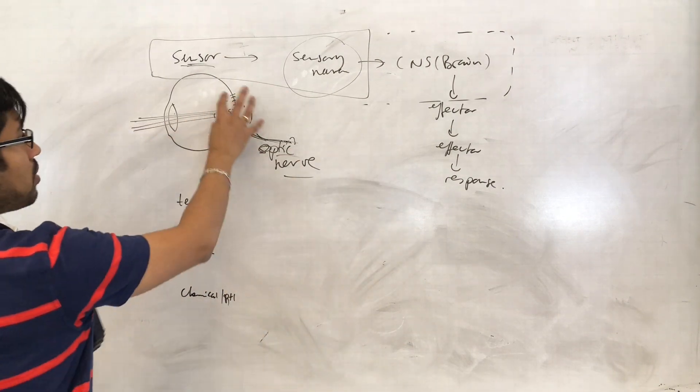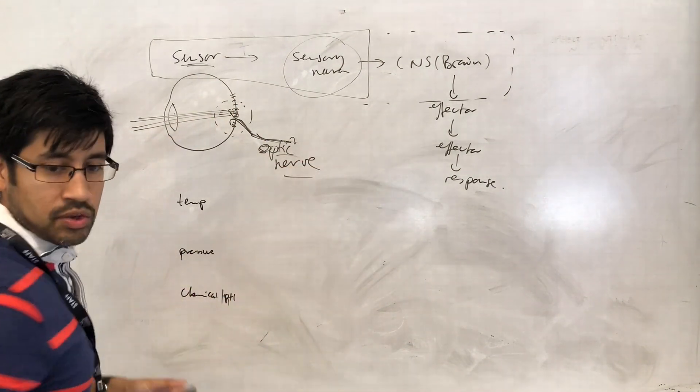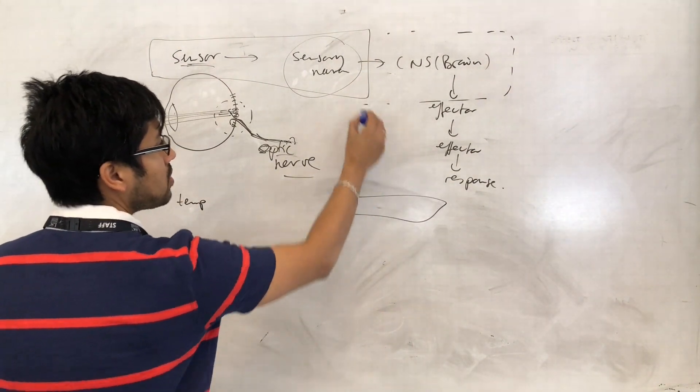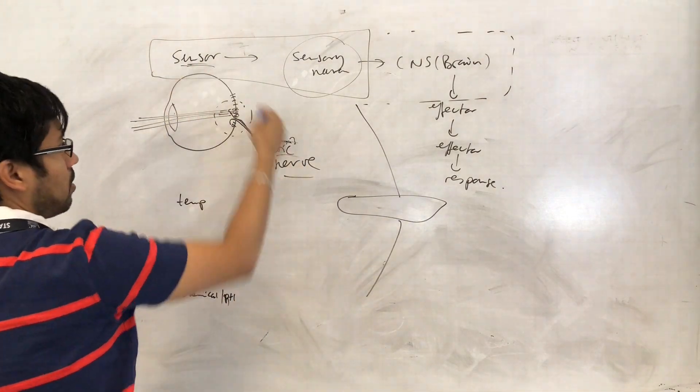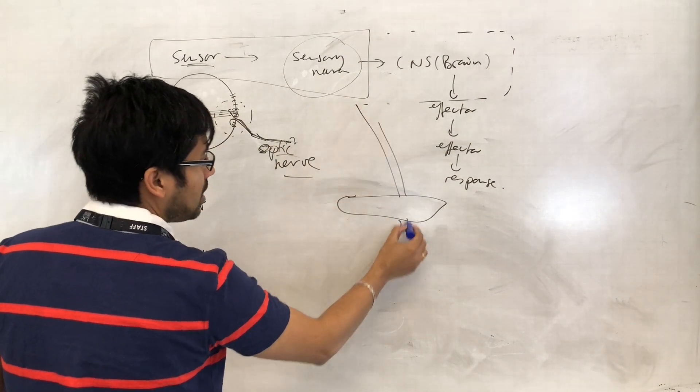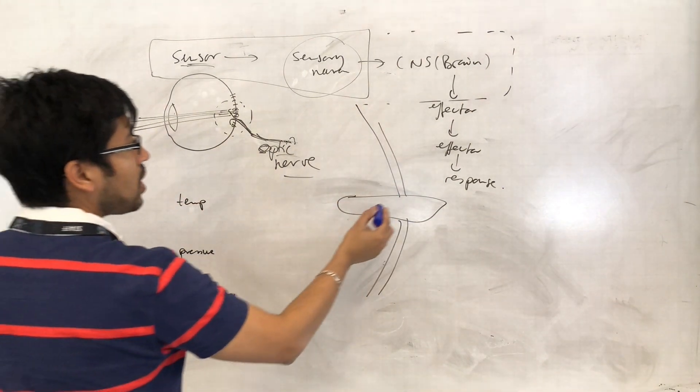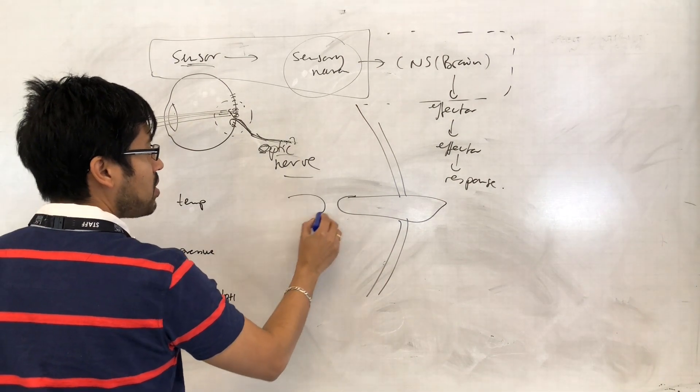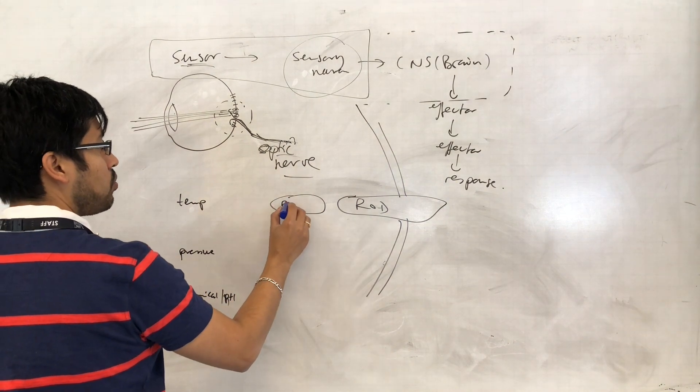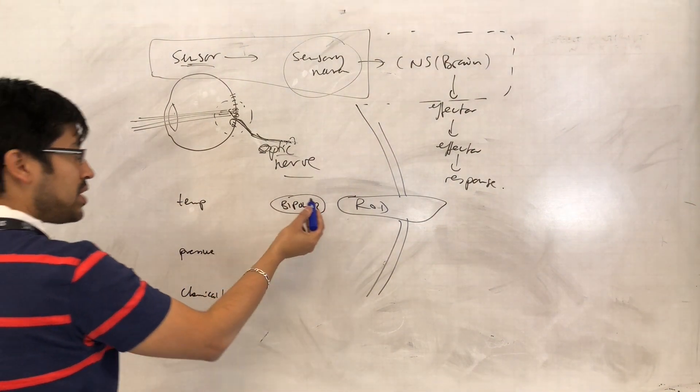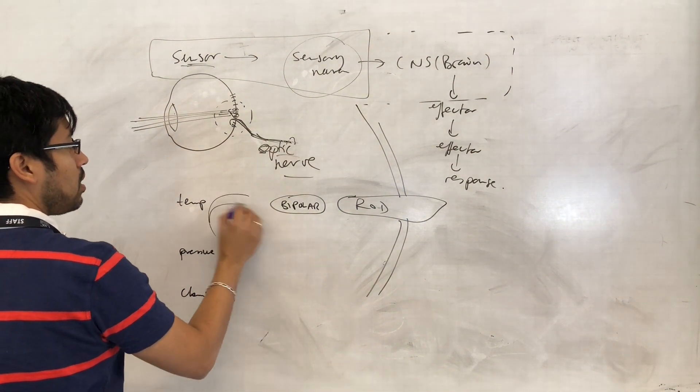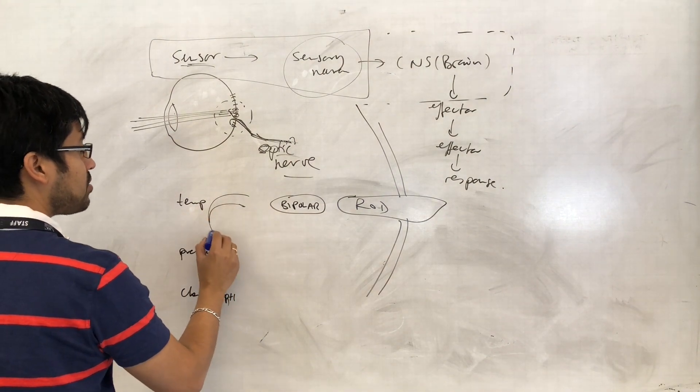I'm just going to draw out the connections. Essentially what it is, we have the rod cell embedded in the eye, embedded into that structure, and that synapses with a bipolar cell. So we've got the rod cell synapsing with the bipolar cell, which itself is synapsing with the dendrites of the sensory neuron.